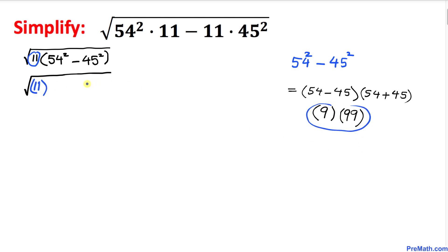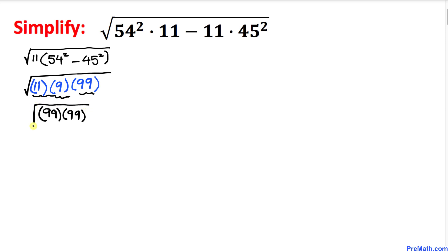And here we can see this 11 times 9 could be written as 99, and then we have another 99. We can write it down over here, and then we got the square root.